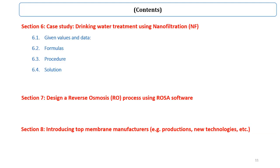Section 7 is one of the major parts of this course. In this section, you will learn about ROSA software and how to design a reverse osmosis system using it. At the end, top membrane manufacturers and their products are introduced so you can become familiar with these membrane products available in the market.